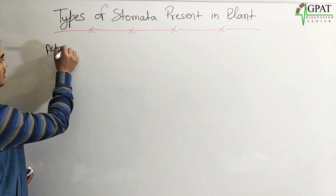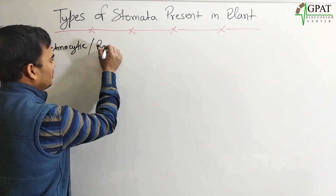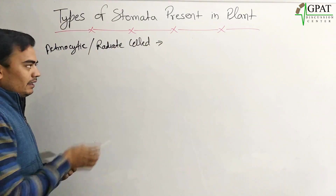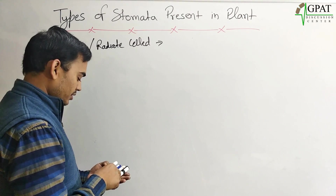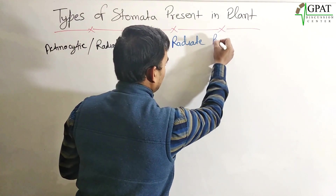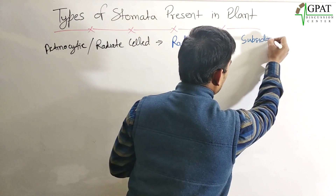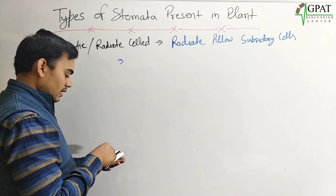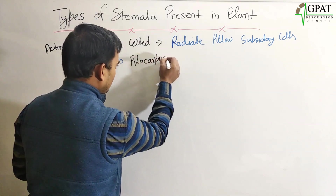The next type is actinocytic stomata, also known as radiate cell stomata. In actinocytic stomata, the subsidiary cells are arranged in a radiate formation. There is one very important example: Pilocarpus.